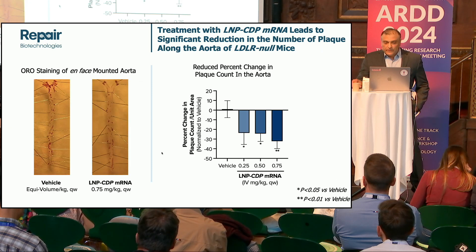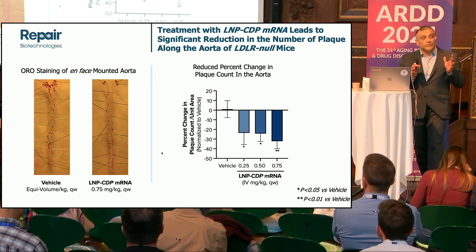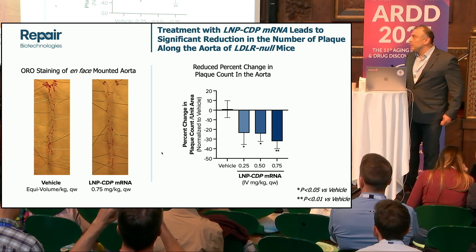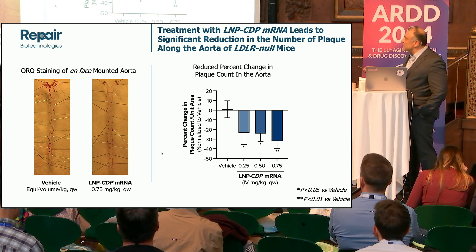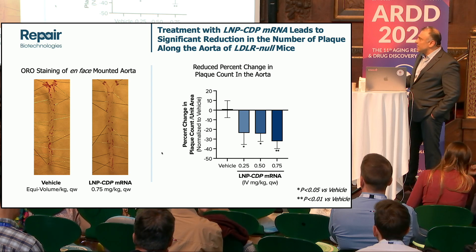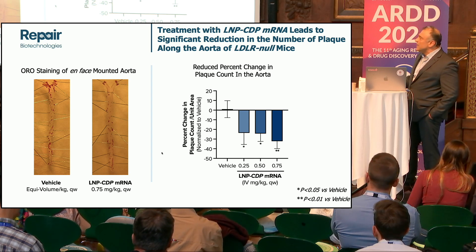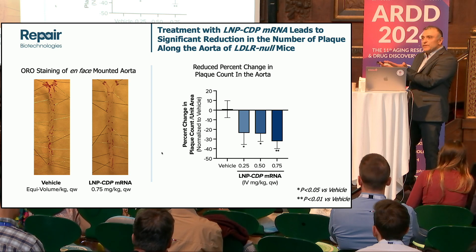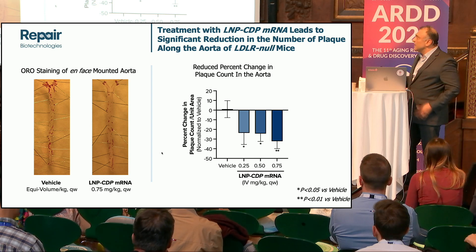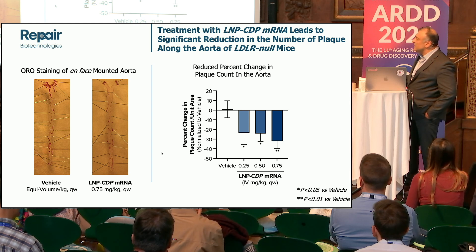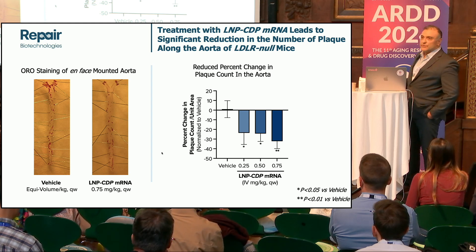Moving on to the aorta: is the plaque reduction only localized to the aortic root, or do we have a generalized reduction? In fact, we do. Here is an en face mounting of an aorta going from the iliac crest all the way to the aortic arch. We opened the blood vessel and stained it with oil red O, showing a reduction in the number of plaques in the treated group versus the vehicle-treated group.